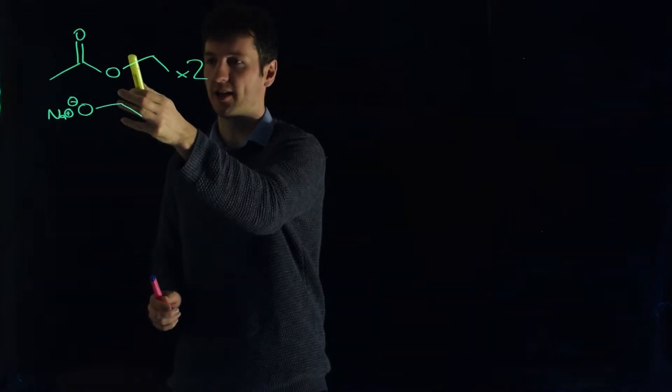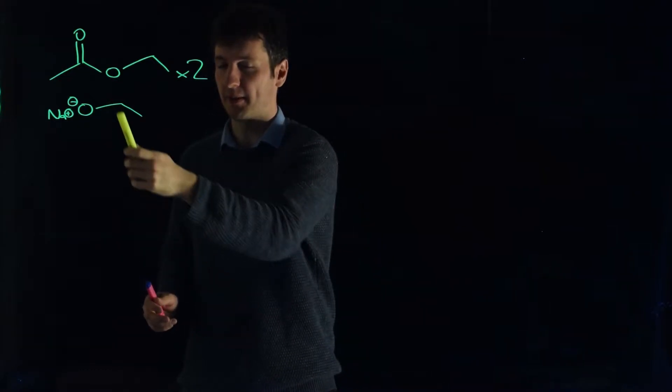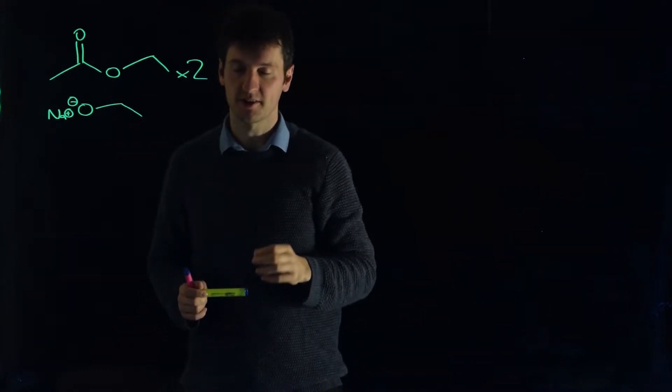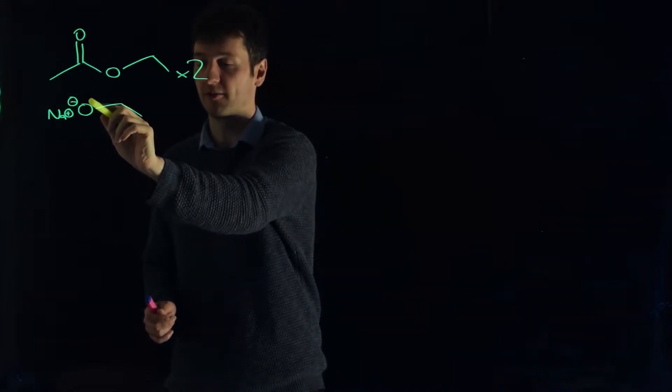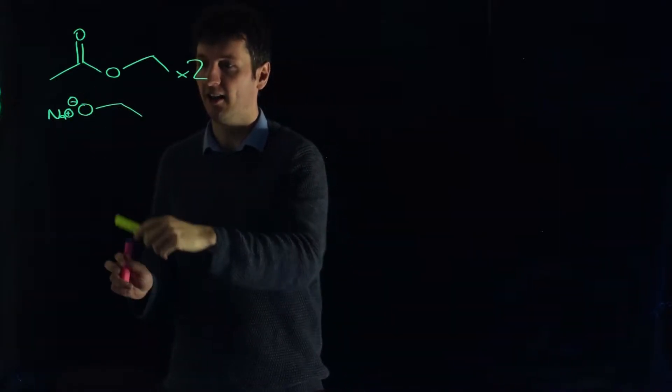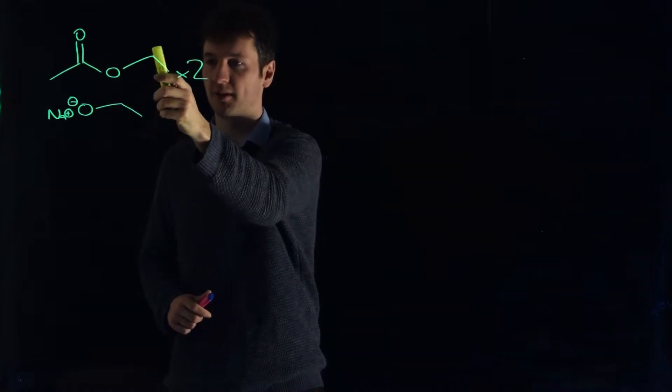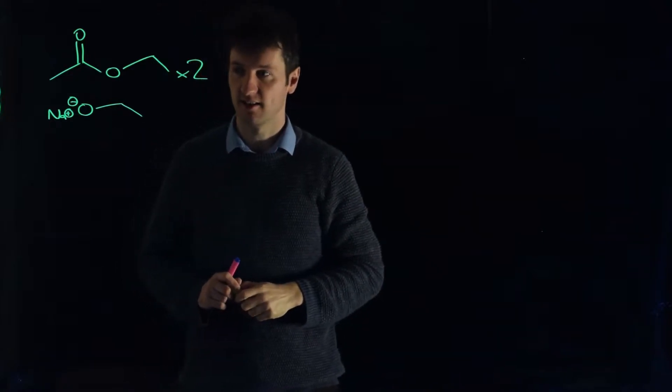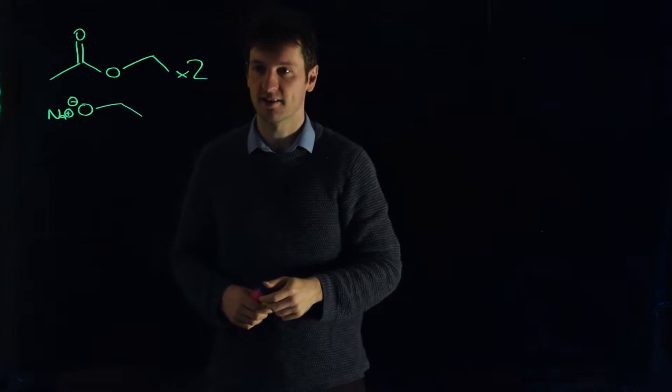If we think about this reaction, we put in an ester in the presence of a reasonably strong base. But this base is also a nucleophile, so our choice of base is important here. We chose sodium ethoxide, and if we use sodium ethoxide as a nucleophile, it would attack our carbonyl carbon, form a tetrahedral intermediate, and kick out a leaving group. But the leaving group would be the same as the ethoxide that attacked in the first place, so that reaction wouldn't lead us anywhere productive.